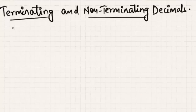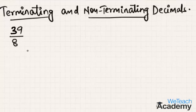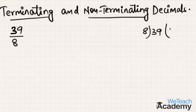Let us consider the fraction 39 by 8 and convert it into its decimal form. So let us divide 39 by 8. Now 8 times 4 is 32, and 39 minus 32 gives us a remainder of 7.